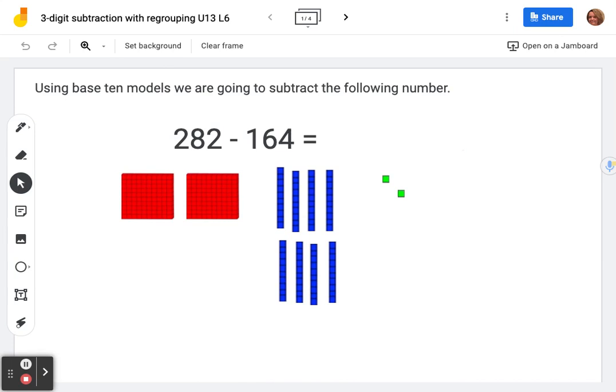Let's subtract with regrouping, three digits. So what I like to do is rewrite it vertically first. So 282 minus 164. You always make your base ten blocks with the larger number because you're subtracting the smaller number from it.